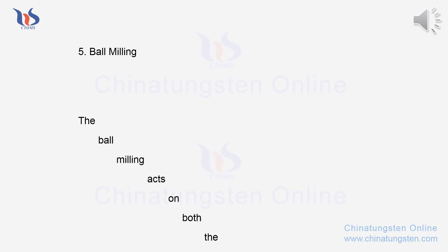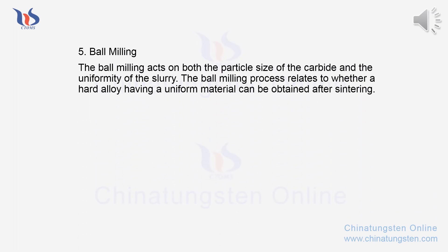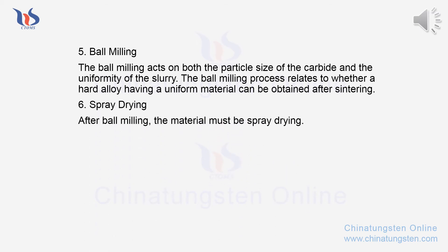Step 5 - Ball milling: Ball milling acts on both the particle size of the carbide and the uniformity of the slurry. The ball milling process determines whether a hard alloy with uniform material can be obtained after sintering. Step 6 - Spray drying: After ball milling, the material must undergo spray drying.